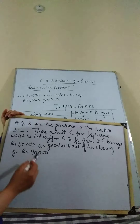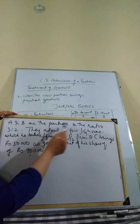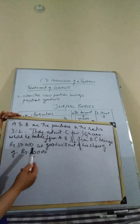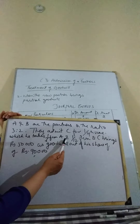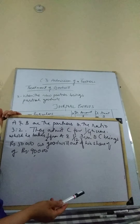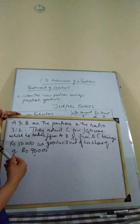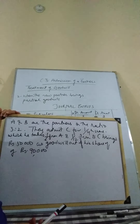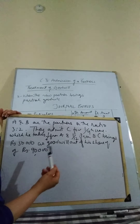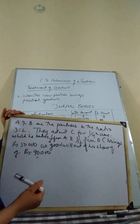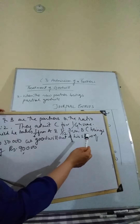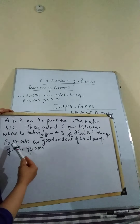A and B are partners in the ratio 3:2. They admit C for a one-fourth share, which he takes one-sixth from A and one-twelfth from B. Using the acquire method, we can directly subtract to calculate the new ratio. The sacrificing ratio is already given as one-sixth and one-twelfth, meaning the sacrificing ratio is 2:1.